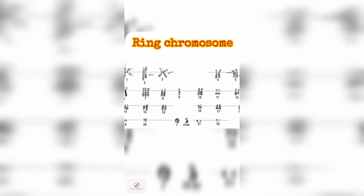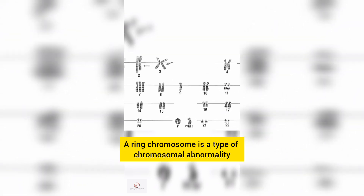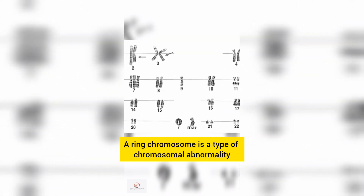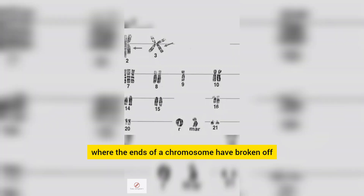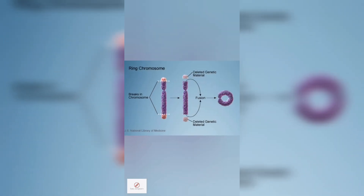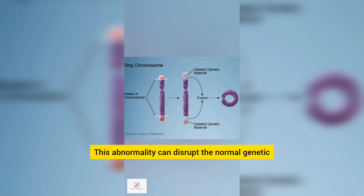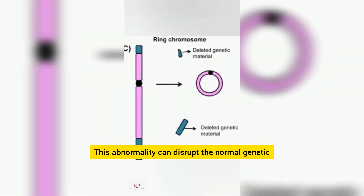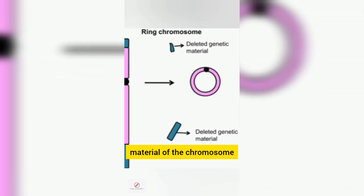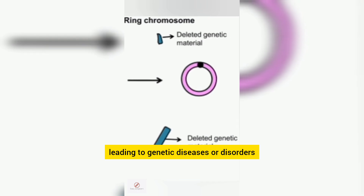Ring Chromosome. A ring chromosome is a type of chromosomal abnormality where the ends of a chromosome have broken off and fused together, forming a circular structure. This abnormality can disrupt the normal genetic material of the chromosome, leading to genetic diseases or disorders.